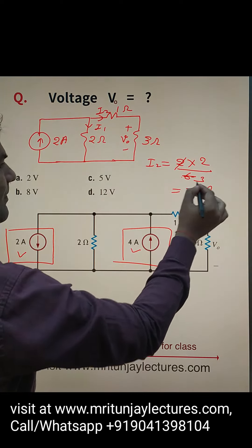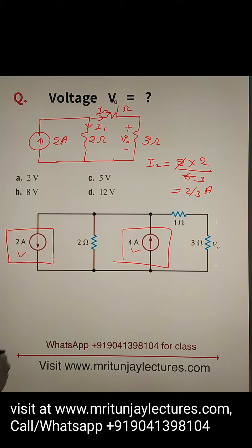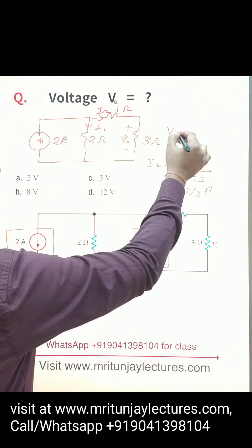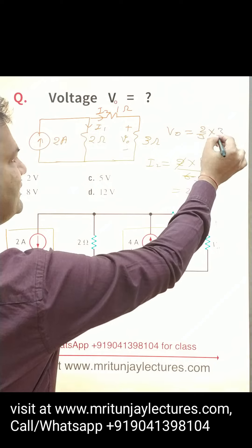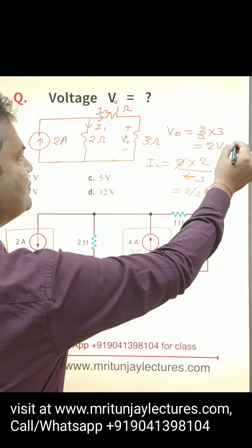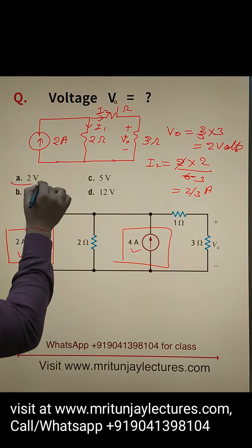What about V₀? V₀ is basically 2/3 into 3, so that is 2 volts. 2 volts is the right answer. Which option is correct? Option A is the correct option.